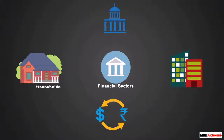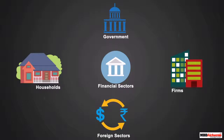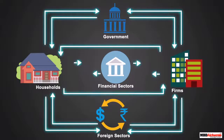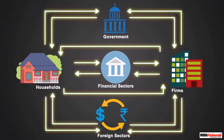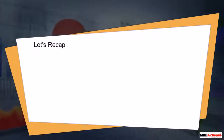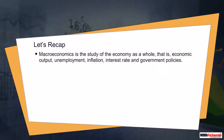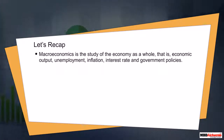Macroeconomics sees an economy as a combination of four sectors — namely households, firms, government, and foreign sectors. We will be studying the flow of income and resources among these sectors in our next module.